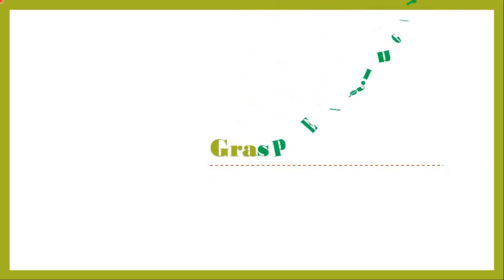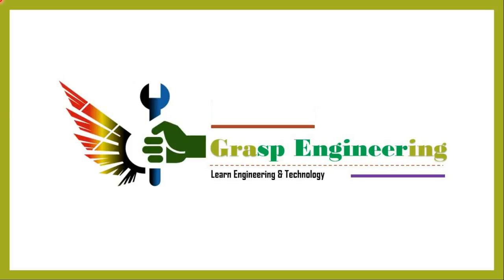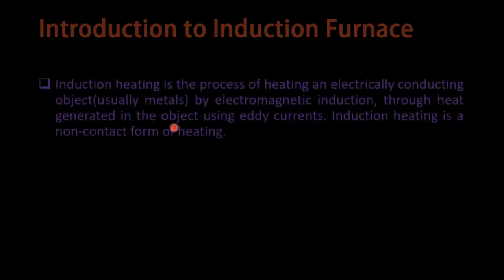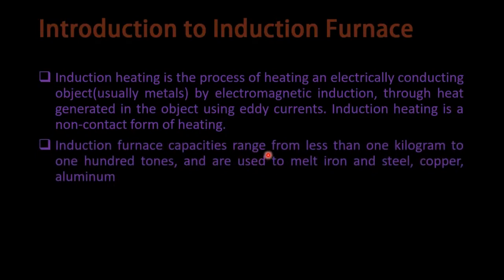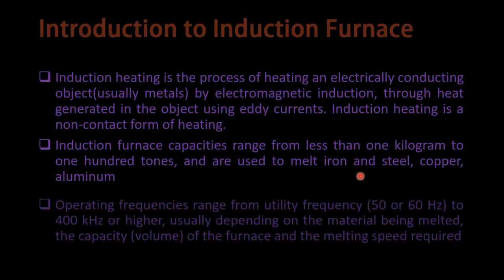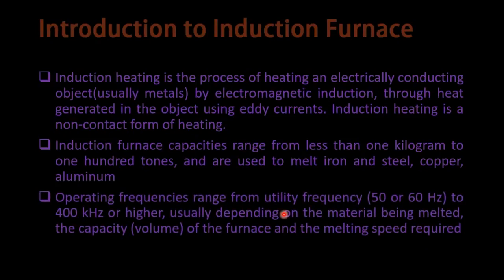This slide represents the introduction to the induction furnace. Induction heating is the process of heating an electrically conducting object, usually metals, by electromagnetic induction through the heat generated using AC currents. It is a non-contact form of heating. Induction furnace capacity ranges from less than 1 kilogram to hundreds of tons and are used to melt iron, steel, copper, as well as aluminum. The operating frequency ranges from utility frequency of 50 to 60 Hz up to 400 kHz or higher, depending on the material being melted, the capacity or volume of the furnace, as well as the melting speed required.